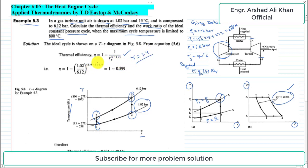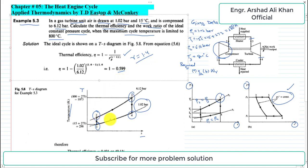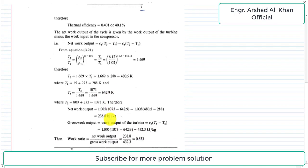Putting the values into this expression — P1 is 1.02 and P2 is 6.12 — and simplifying, we get 1 minus 0.599. So the thermal efficiency comes out to 0.401, or 40.1 percent.